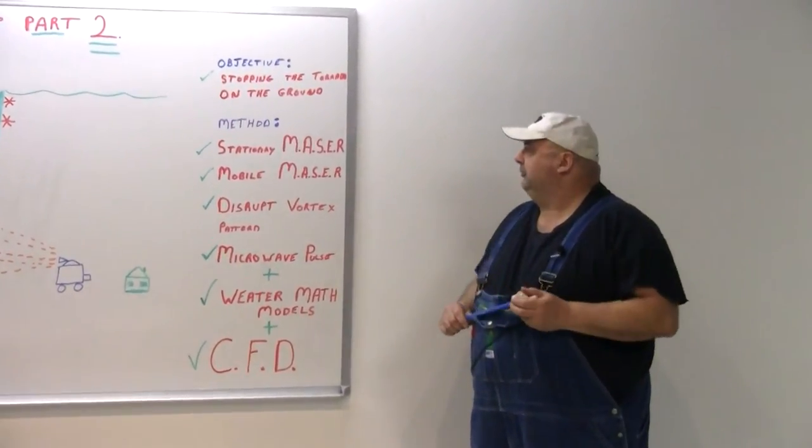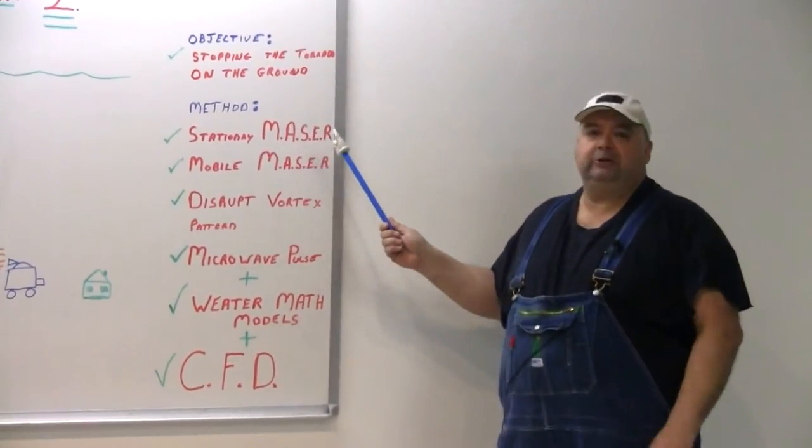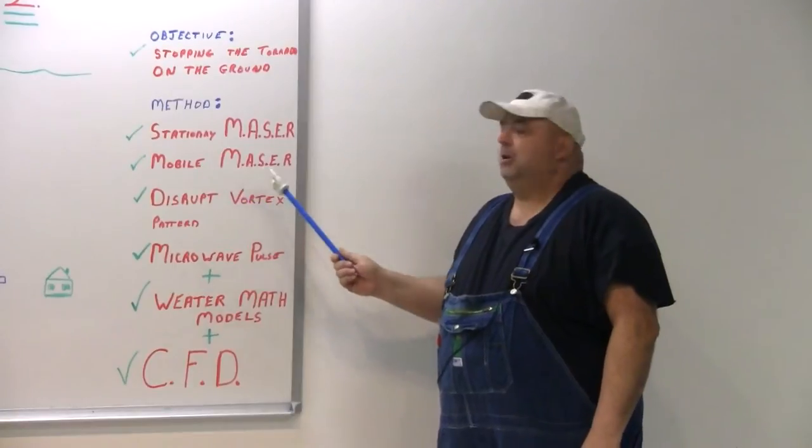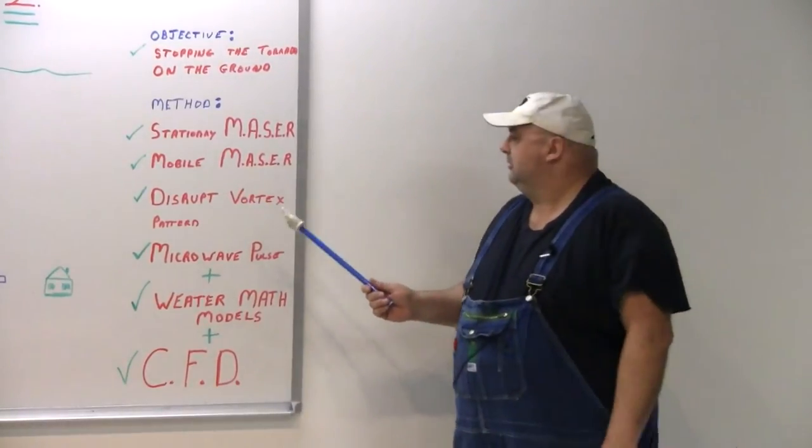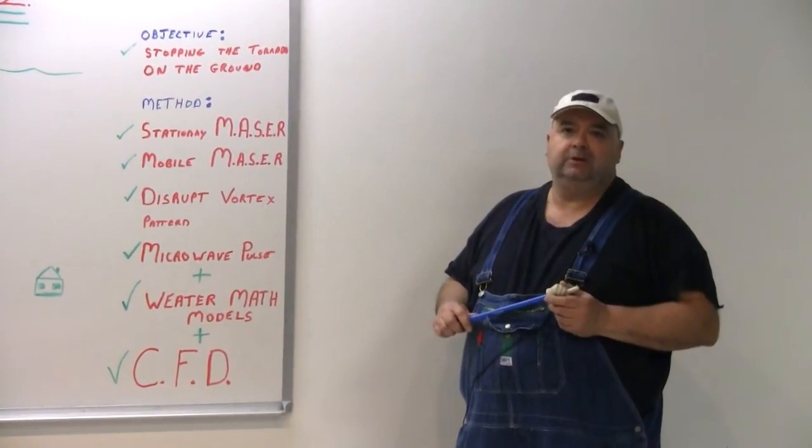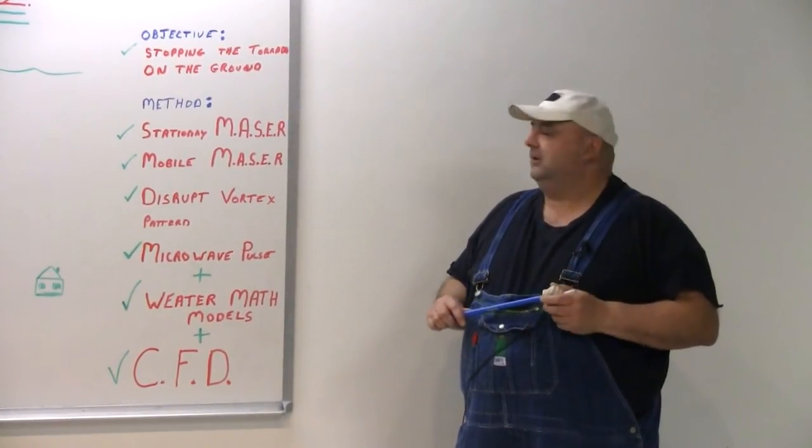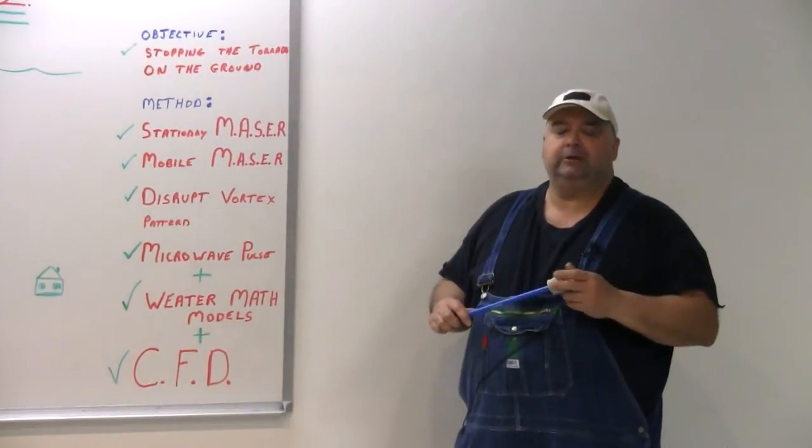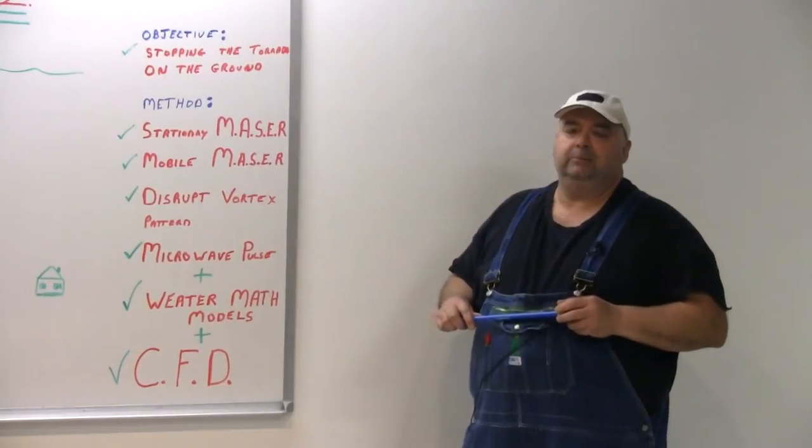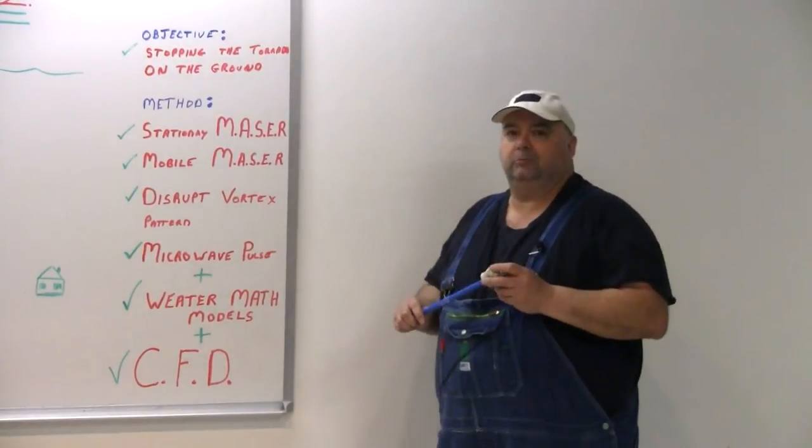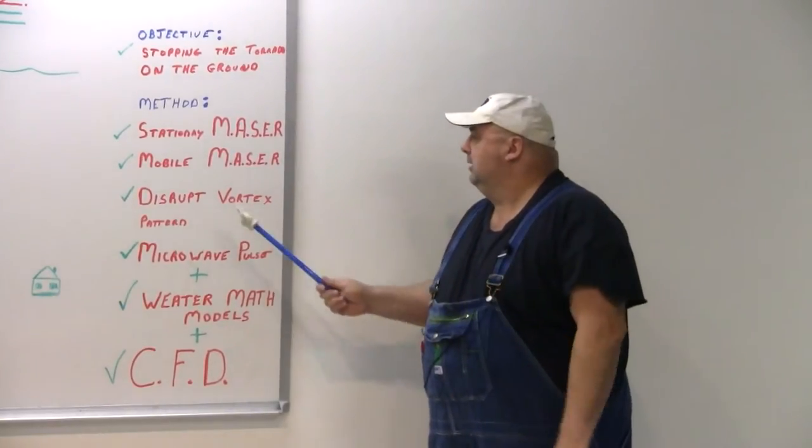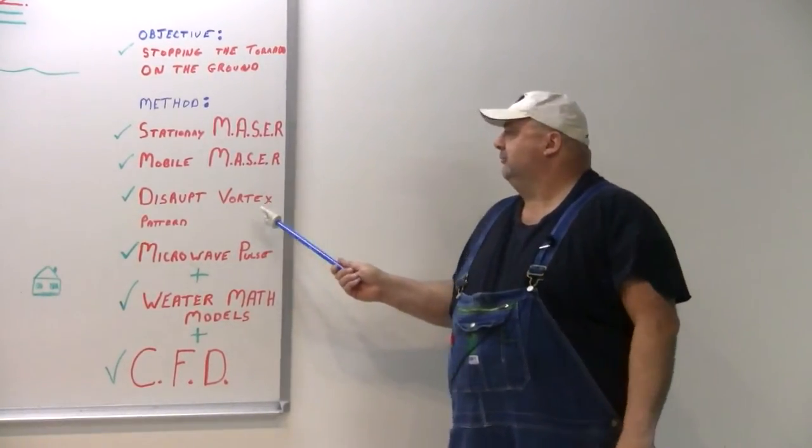The method I'll be using is, one is a stationary maser, and this is just all an example. Second is a mobile maser. Masers, think of your microwave oven type, they have magnetrons in there. They polarize the molecules and heat them up. I went into that in part one. We're going into it later in depth in part three. What our objective is is disrupt the vortex pattern.